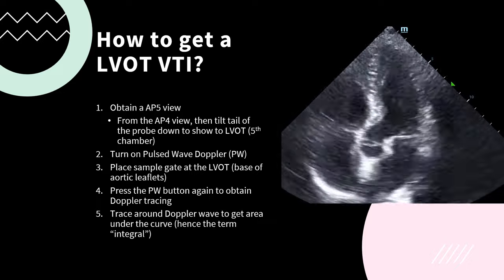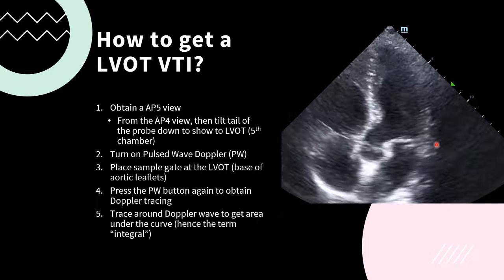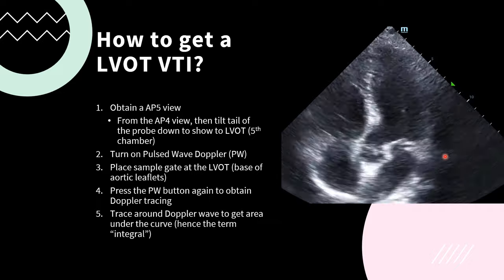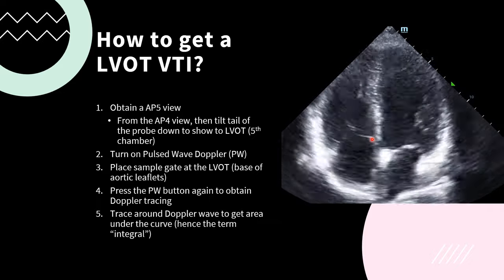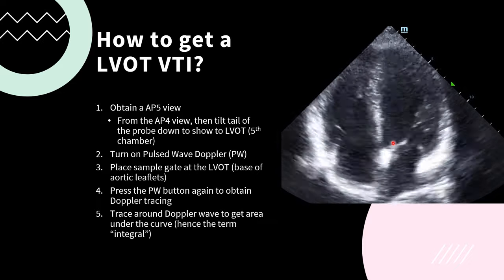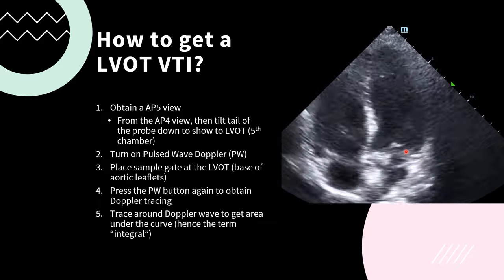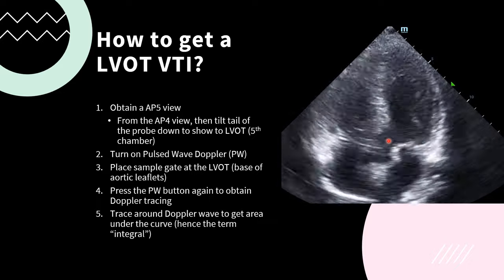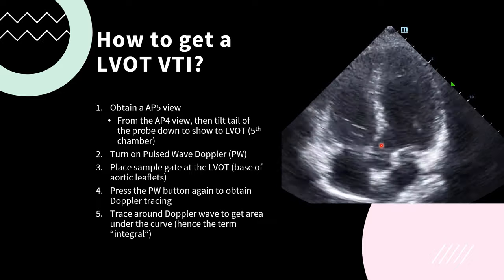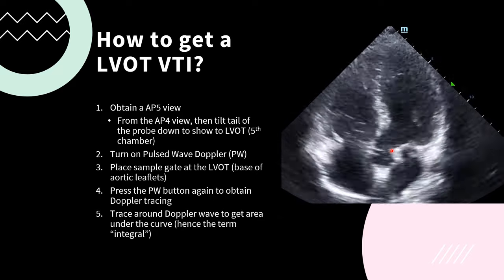To obtain an LVOT VTI, we need an apical 5-chamber view. We start with an apical 4-chamber view, then tilt the tail of the probe down to display the LVOT — seen here as the 5th chamber. We activate the pulse wave Doppler and place the sample gate in the LVOT right at the base of the aortic leaflets, then press the pulse wave Doppler button again to obtain a Doppler tracing. Ideally, the pulse wave Doppler beam should be in a direct line with LVOT blood flow, or as close to parallel as possible. Then we trace around the Doppler wave to get the area under the curve — hence the term "integral" in the acronym.